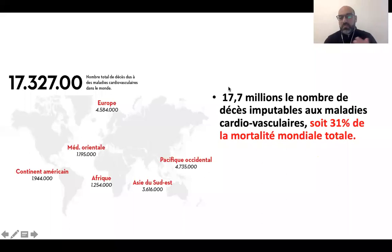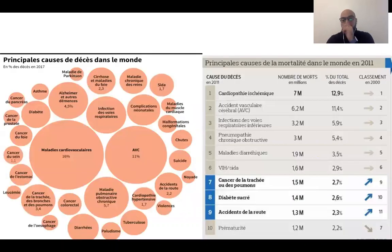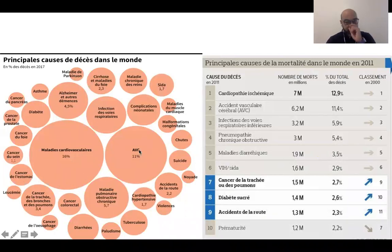On estime actuellement entre 17 et 20 millions de décès imputables dans le monde, ce qui représente 30% de la mortalité mondiale. En détaillant cette mortalité, on voit que les maladies cardiovasculaires — maladies du cœur mais aussi du cerveau, les AVC ischémiques — représentent une grosse part de mortalité dans le monde.